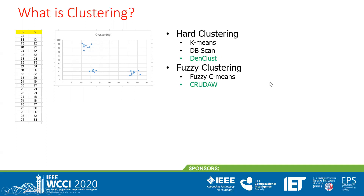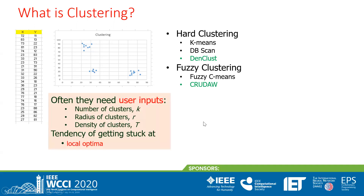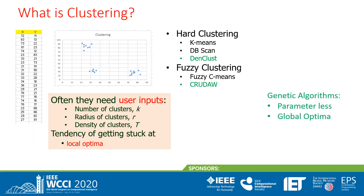There are many existing clustering techniques — some classified as hard clustering, some as fuzzy clustering — but they generally have limitations. For example, some techniques like K-means require the number of clusters as input from the user, which can be difficult to assume in advance. Also, these techniques can get stuck at a local optimum.